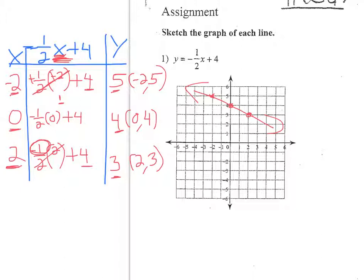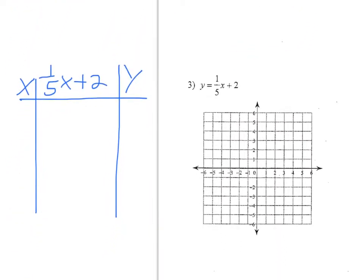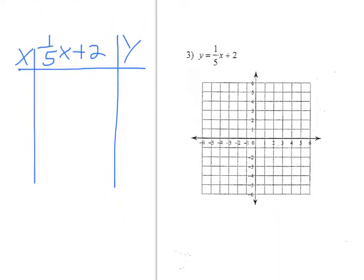Let's go to number 3. You can see I have the x-y chart written to the left. You see you have that ugly fraction, 1/5. The main thing is this denominator — the 5. That tells me if I want to get whole numbers back for y, let's plug in multiples of 5. Easy way of doing it: let's plug in negative 5, 0, and 5. Whenever you plug in 0, it's always going to equal this number — because 1/5 times 0 is 0, and you get plus 2. So this number always equals the y value when you plug in 0 for x. So this is 2.